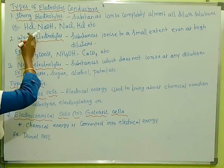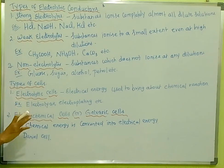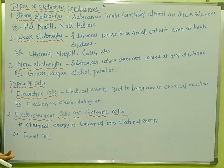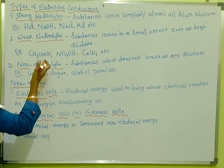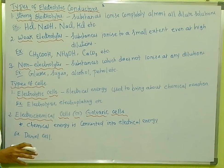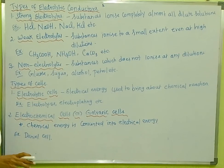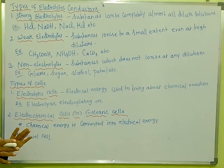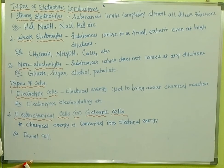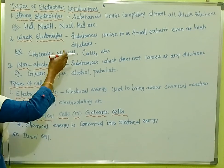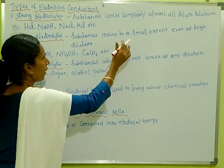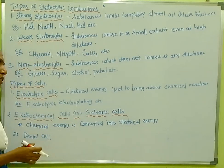For example, HCl dissociates into H+ and Cl-. Sodium chloride and potassium chloride are also strong electrolytes. A strong electrolyte is a substance that is ionized to a large extent even at high dilute solutions.